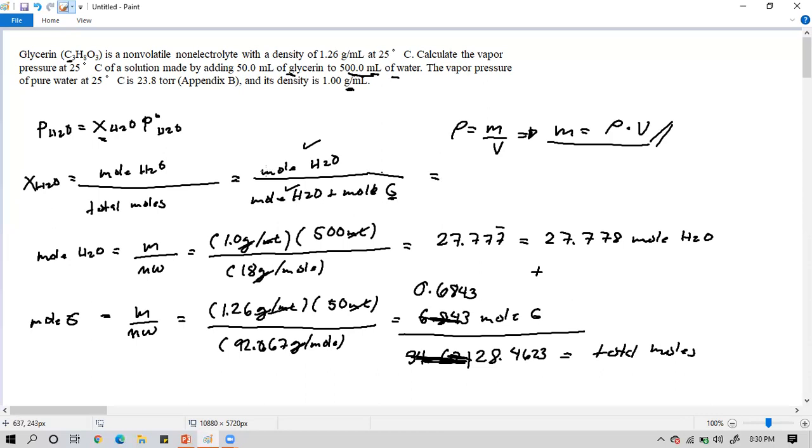Now back to this. The moles of water is 27.778 moles all over the total moles, 28.4623. Let's calculate: 27.778 over 28.4623 equals 0.976. As you can notice, it's a lengthy calculation before we substitute the values for the mole fraction of water.